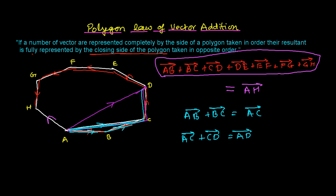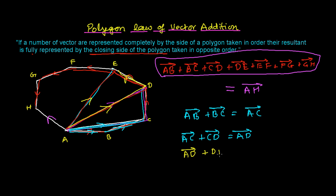Similarly, if I connect A and E, I get triangle ADE. In this triangle, the two sides taken in the same order give the third side as the resultant. The third side represents the magnitude and direction, so AD + DE = AE.